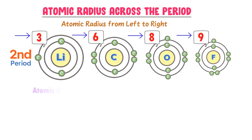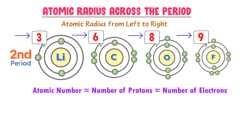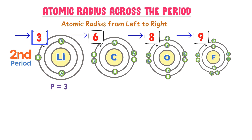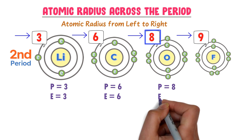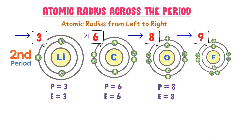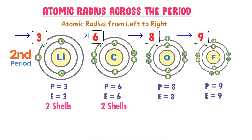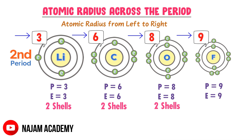The atomic number of a neutral atom indicates the total number of protons and electrons. So in the lithium atom there are 3 protons and 3 electrons; in carbon there are 6 protons and 6 electrons; in oxygen there are 8 protons and 8 electrons; and in fluorine there are 9 protons and 9 electrons. There are 2 shells in each of these atoms: lithium, carbon, oxygen, and fluorine.